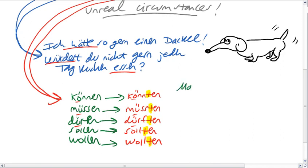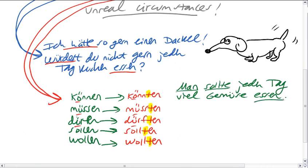So we can use these to have some examples of advice we could give. Or just general statements about what would be good. So, man sollte jeden Tag viel Gemüse essen. So one should eat lots of vegetables every day. That's advice.